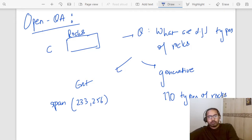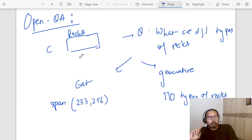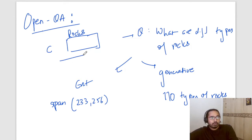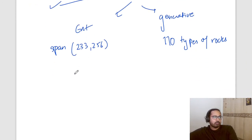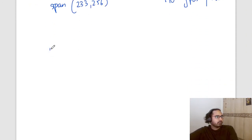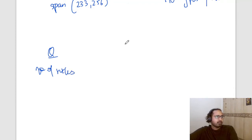So this is what a traditional QA model usually looks like. The key difference between a normal QA and open QA is the context. In open QA, there is no fixed context for the entire question. In open QA you will simply get a question — let's say again the same question about the number of rocks — but here you have to select the context as well.